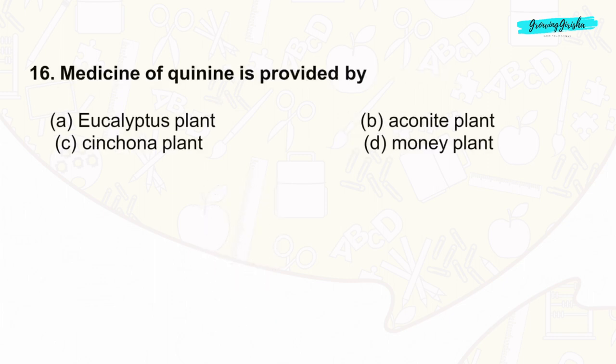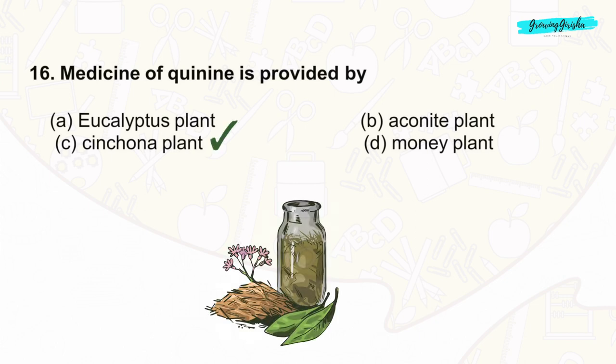Question 16: The medicine quinine is provided by the cinchona plant. Quinine is historically used to treat malaria due to its anti-malarial properties. The correct answer is option C.